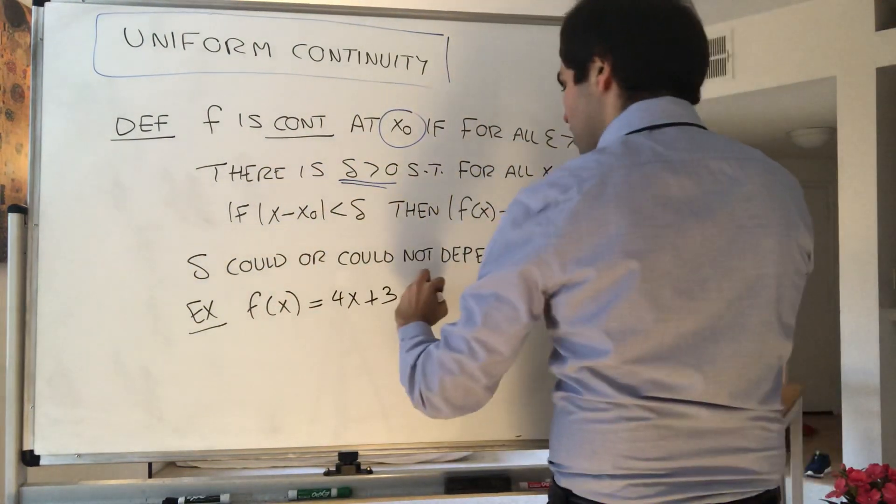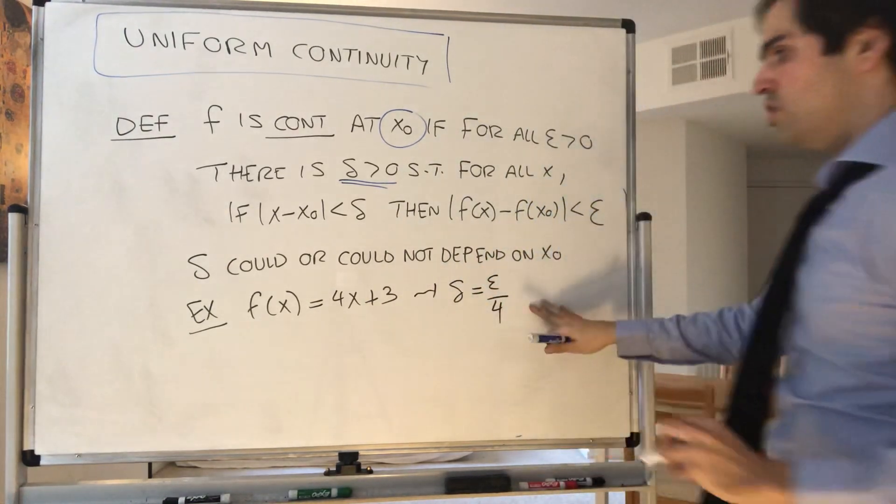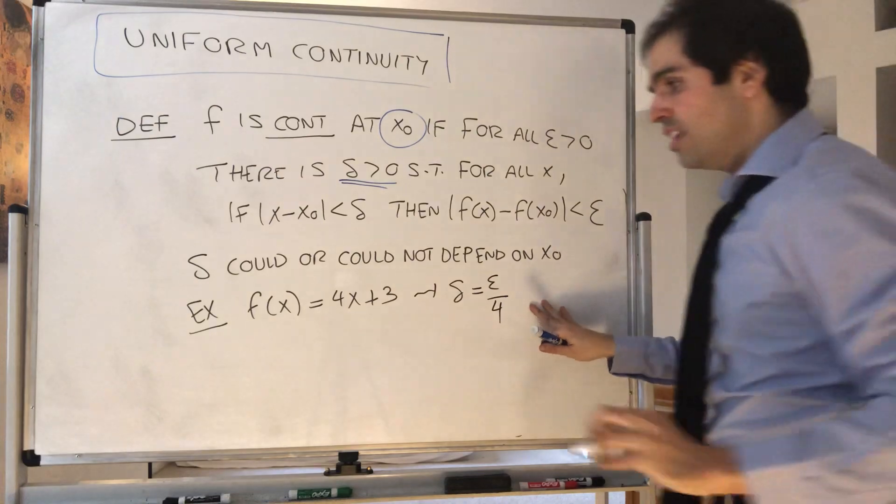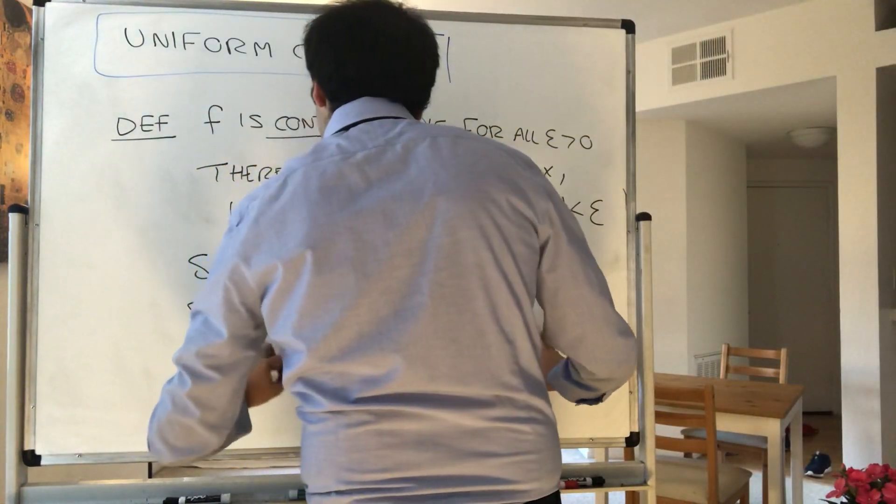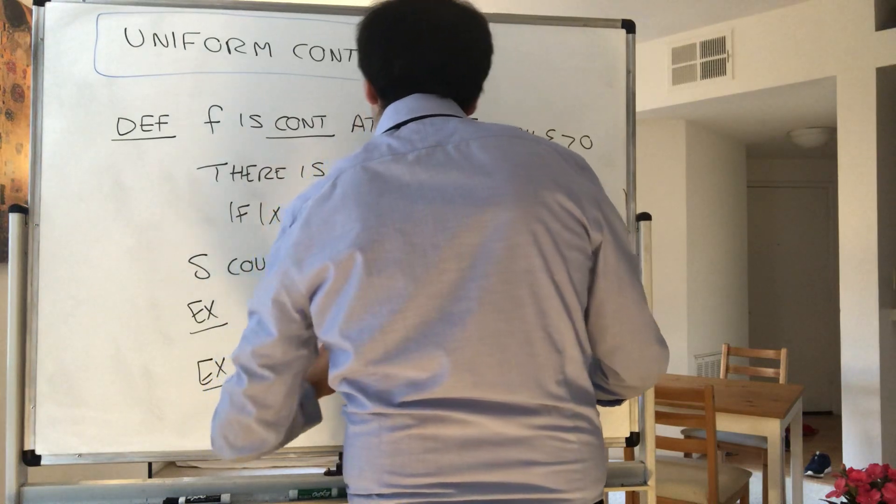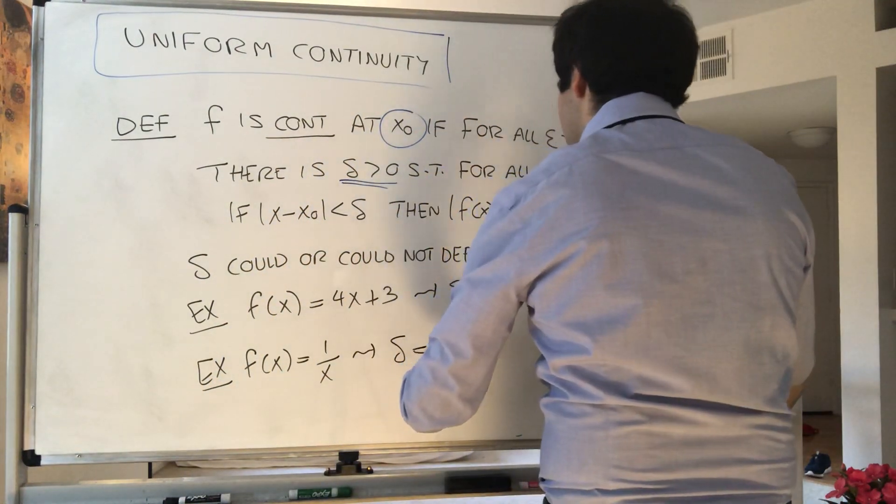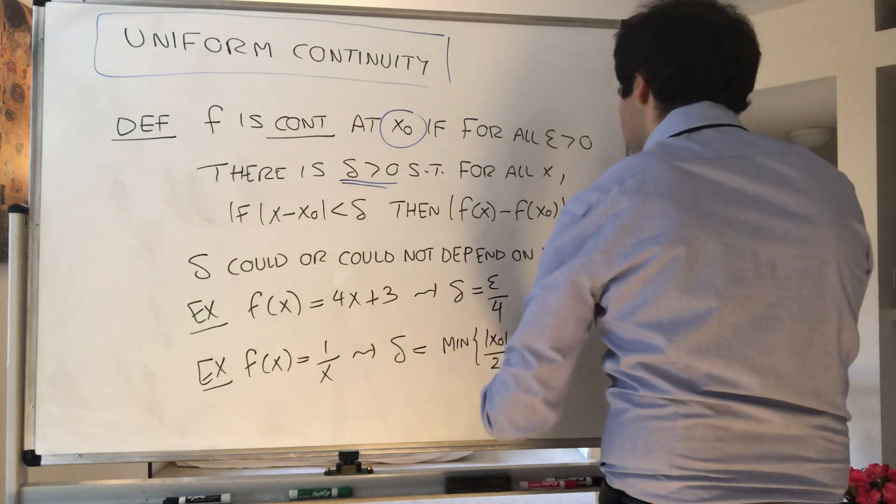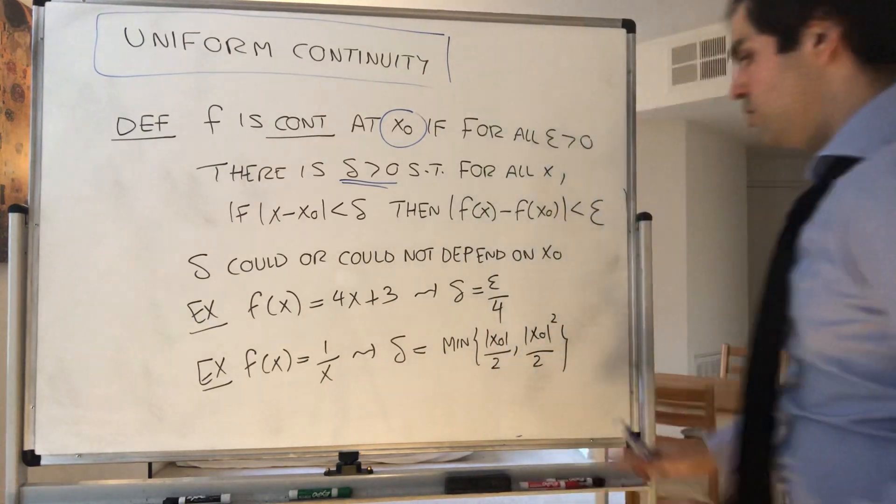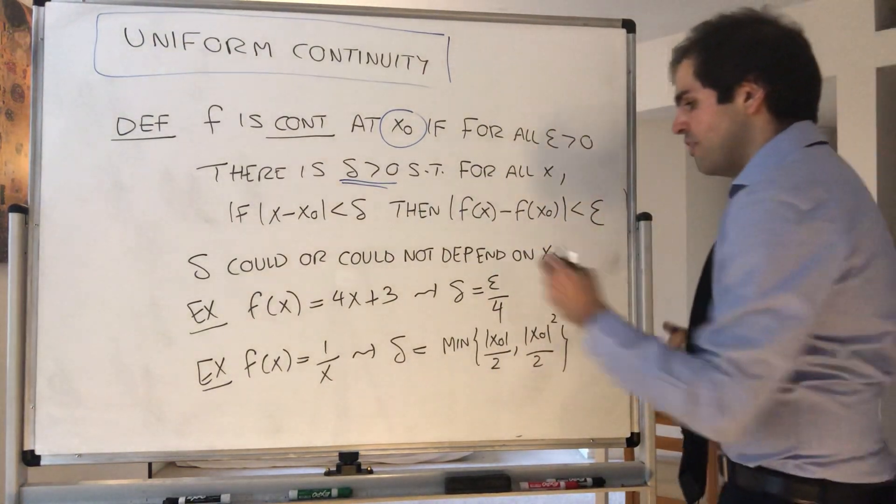If you have f of x equals 4x plus 3, then delta turns out you can show it's epsilon over 4, which does not depend on x0. But if you have f of x equals 1 over x, then we found that delta was just a minimum of x0 over 2 and x0 squared over 2 epsilon. And you see here delta depends on x0, here it's independent of x0.